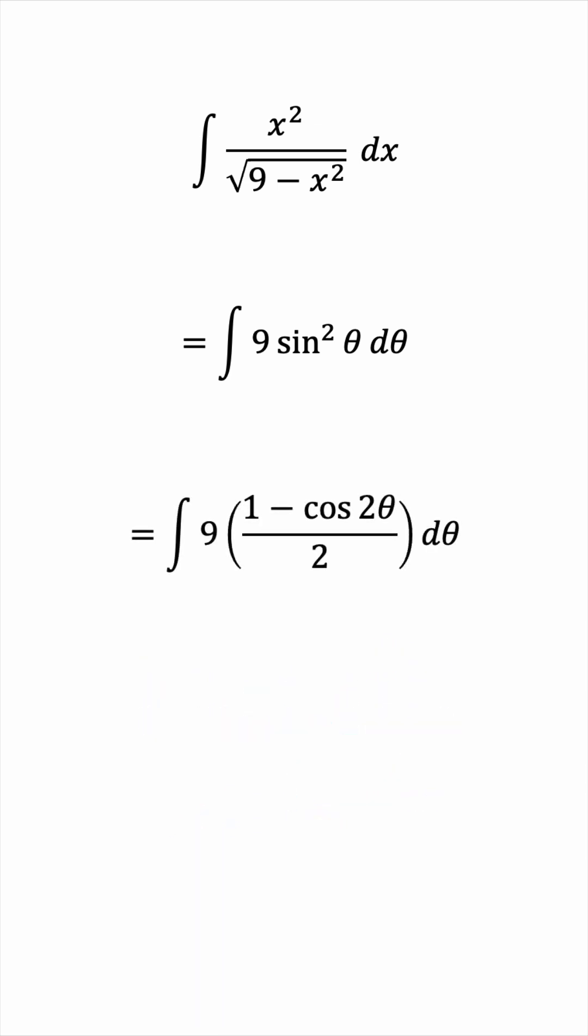Now, 9 over 2 is just a constant, so we can take it outside the integral, and the antiderivative is now very easy to find.